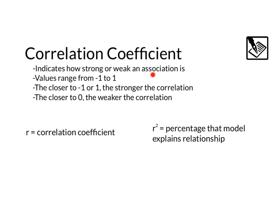The correlation coefficient indicates how strong or weak an association is. The values can range from negative 1 to 1. The closer to negative 1 or 1, the stronger the correlation. Negative 1 would be a perfect negative correlation. Positive 1 would be a perfect positive correlation. The closer the correlation coefficient is to zero, the weaker the correlation is. We use the variable r to represent the correlation coefficient, and if we square that value, r squared, that tells us the percentage that the model explains the relationship.